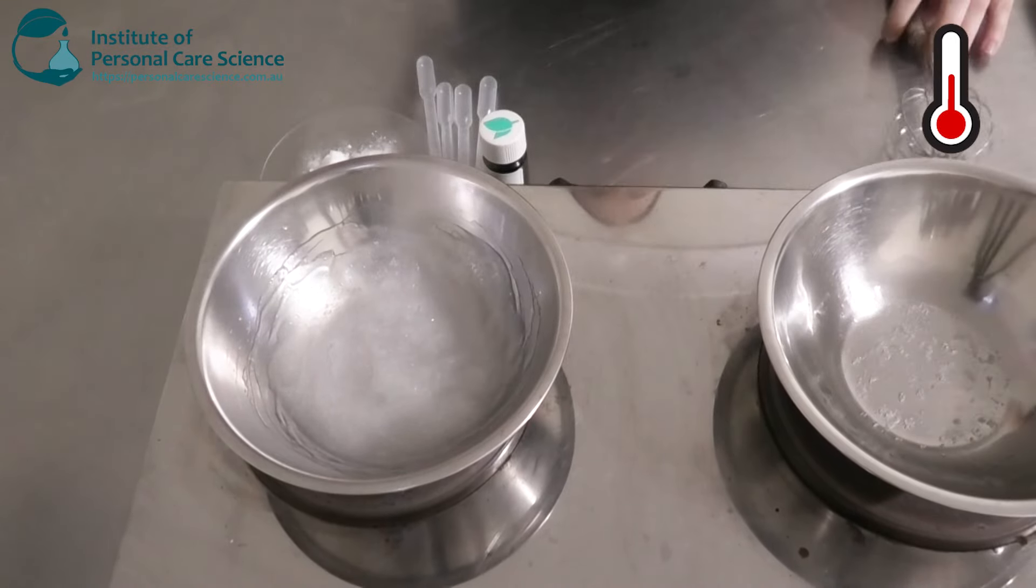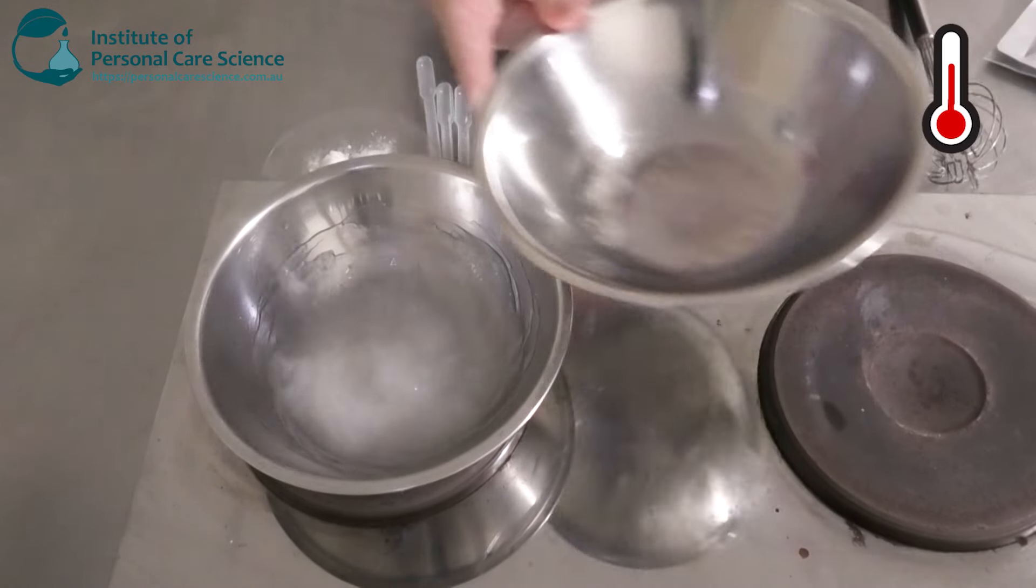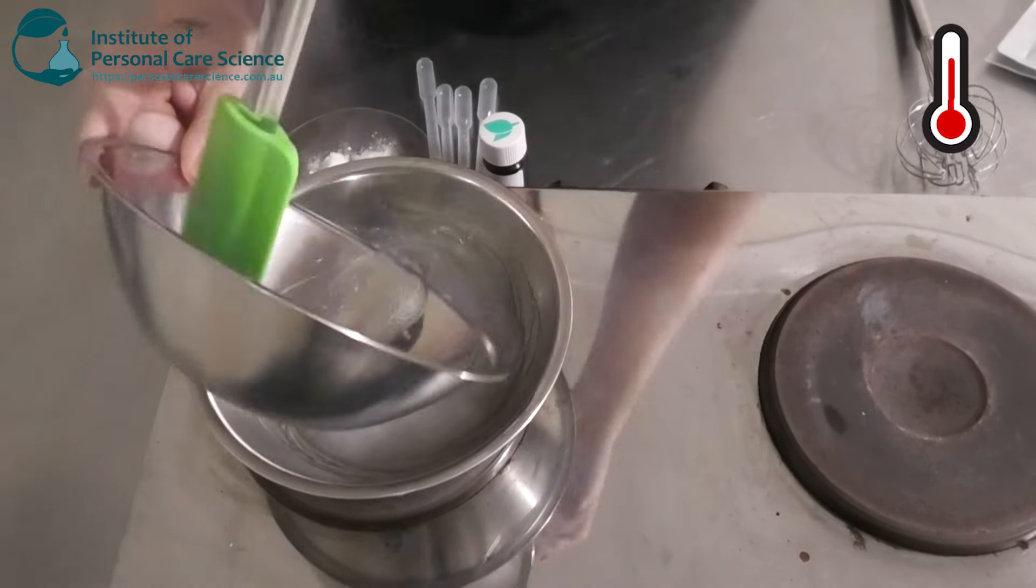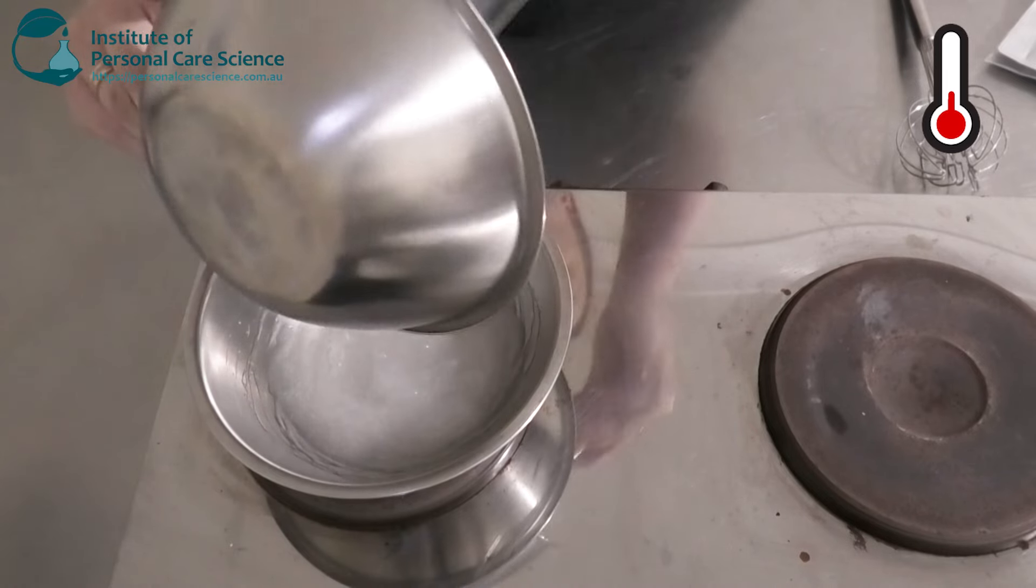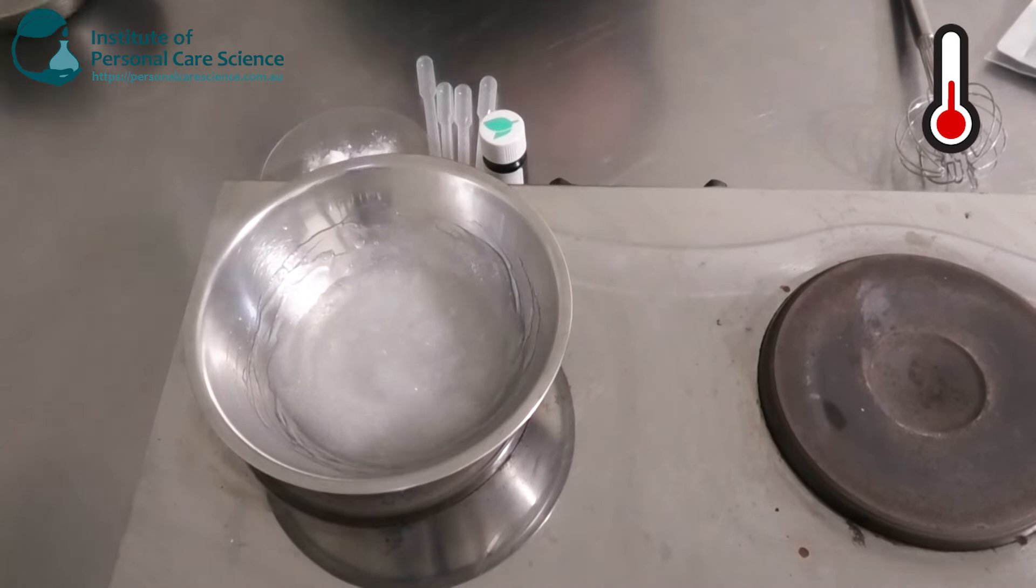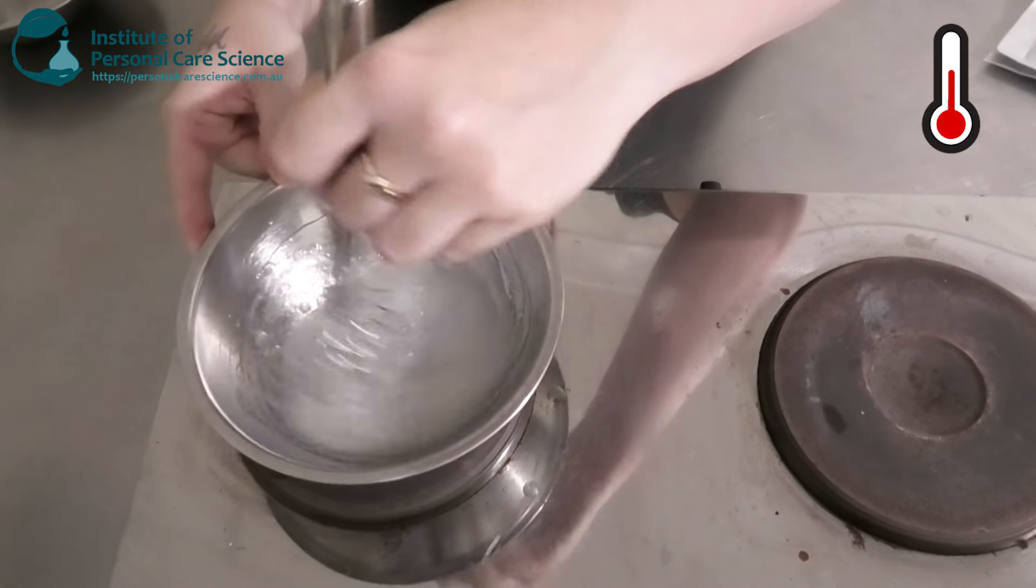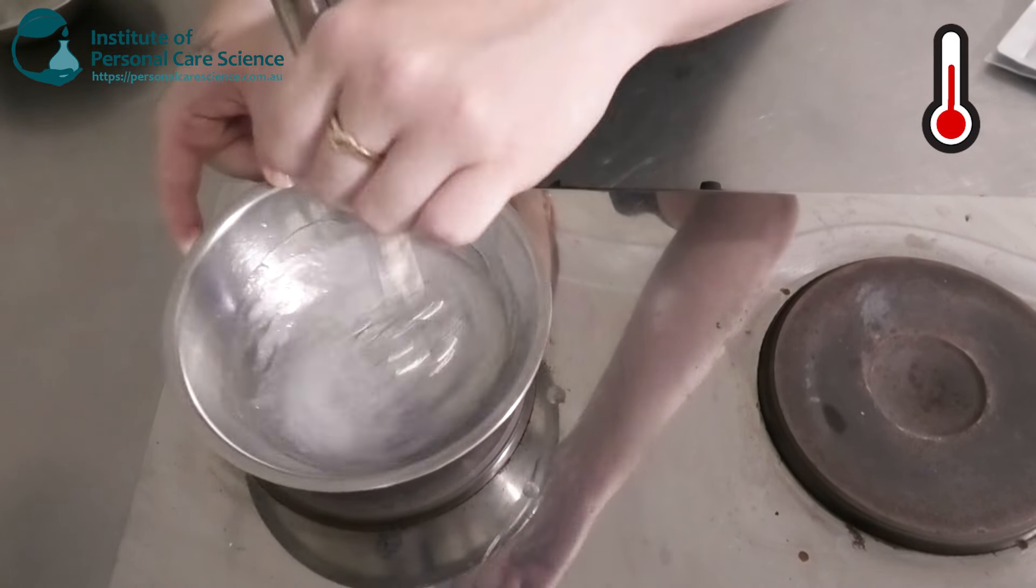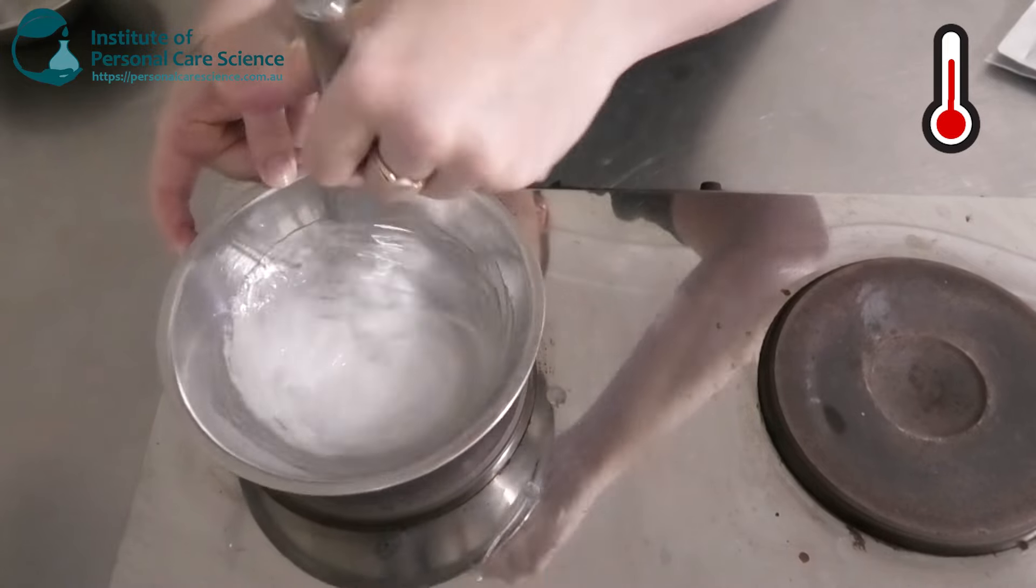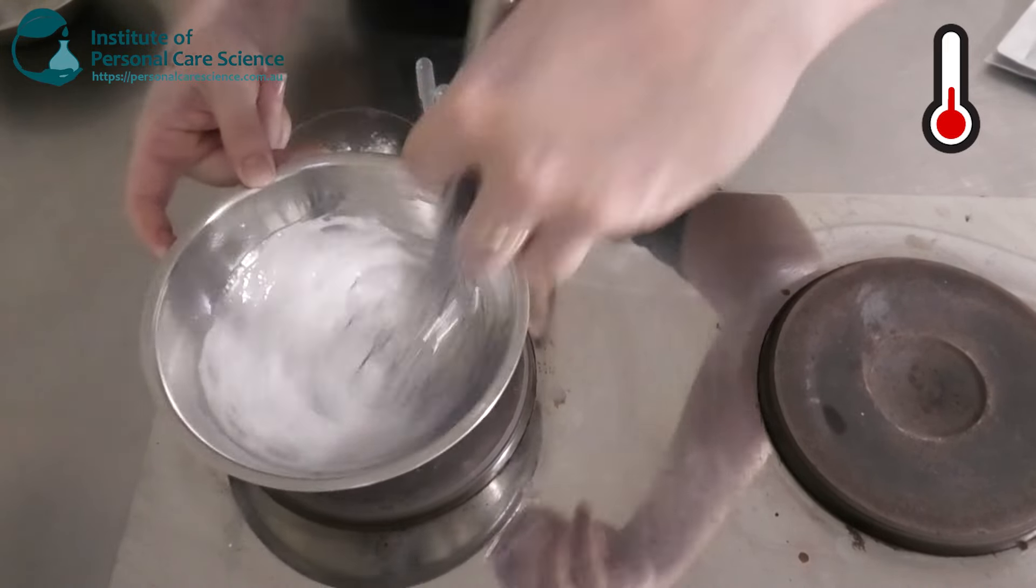Now you do want to make sure your water phase is nice and hot before adding your oil phase, because you don't want your waxes to stay solid or you will get what we call waxy water. So make sure it's hot enough before you combine, and you can see a nice beautiful white homogenous emulsion is starting to form.